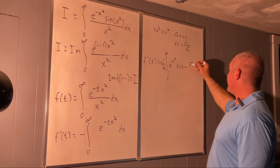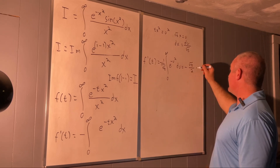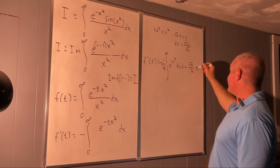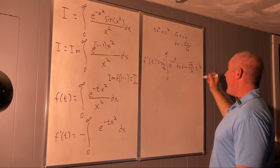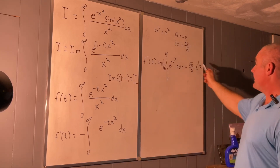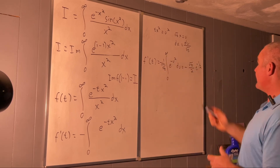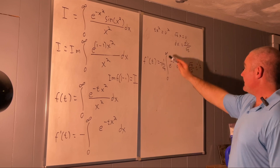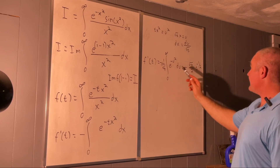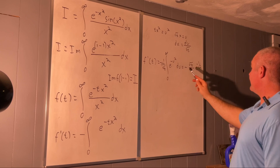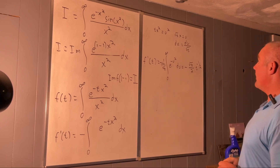That equals negative square root of pi over two times t to the negative one half. So there is our F prime of t — the part in front becomes square root of pi over two with a negative t to the negative one half. That's right.